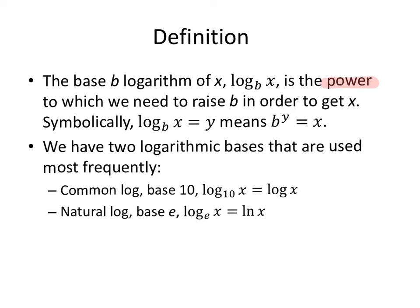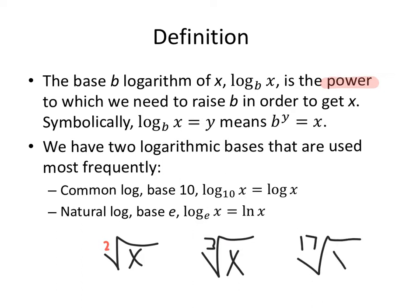We have two logarithmic bases that are used most frequently. The common log is base 10, and it's used so commonly that instead of writing the base of 10, we just leave it out — just like with square roots. If we have a square root of x, we automatically know that's a square root because nothing's written. But if we have a cube root or a 17th root, we have to write the index. The one used most frequently, we frequently don't have to write the clarifier.